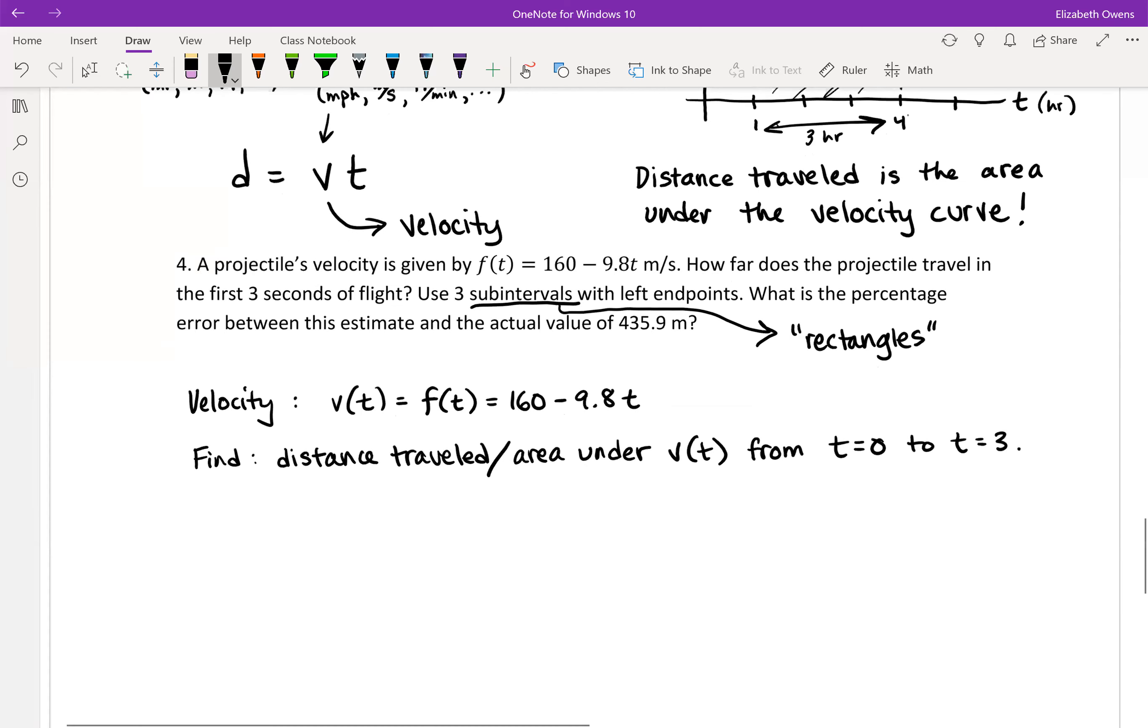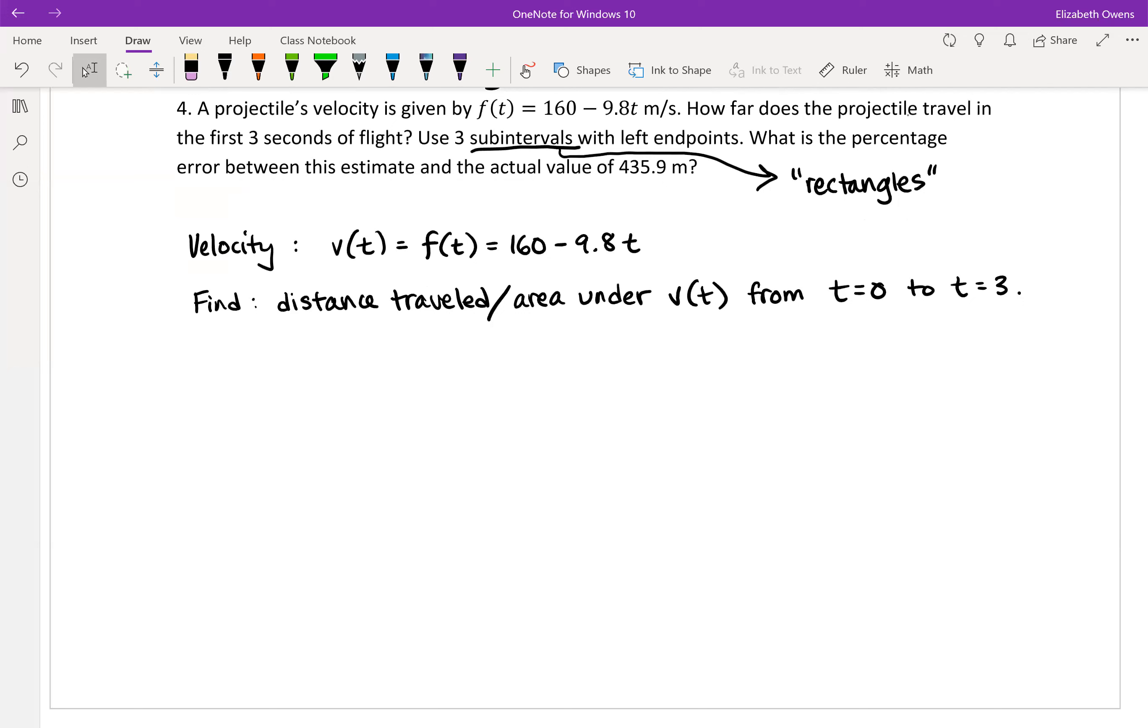All right, so let's sketch this out first. We're going to make a very quick sketch here, just to see what this looks like. t, v(t). Our function here, 160 minus 9.8t, that is a linear function. Our graph should just be a line. So the slope of this line, this is linear, and the slope is negative 9.8 and the y-intercept is 160.